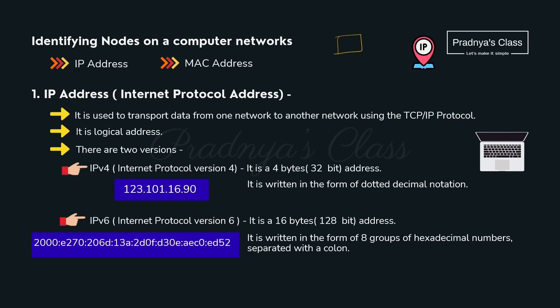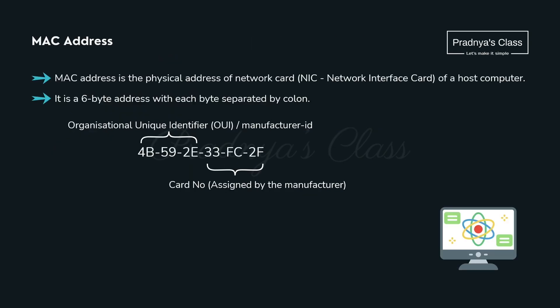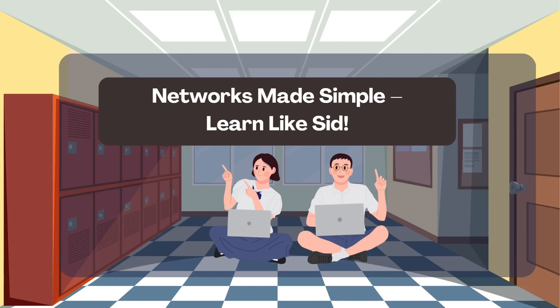A network connects different computers to each other — but how do we identify our computer over the network? For that, we have two arrangements. The first is IP address — internet protocol address. There are two types: IPv4 and IPv6. It is used to transfer data from one network to another and is a logical address. The second is MAC address — the physical address of the network card.